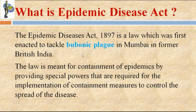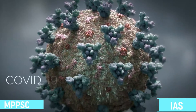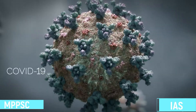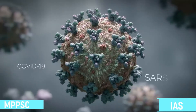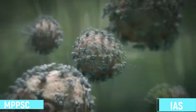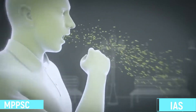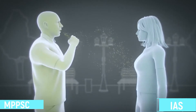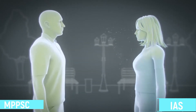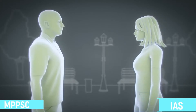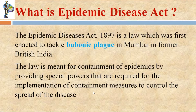The Epidemic Disease Act in India was passed in 1897 during British rule, to fight with the bubonic plague in Mumbai. The purpose of the Epidemic Disease Act is to contain epidemics, and it provides special power to the executive to implement certain programs, schemes, and executive orders to contain the outbreak of such diseases.